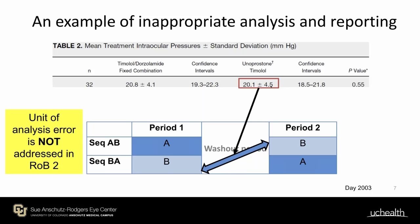The unit of analysis error affects the precision of the estimate rather than the point estimate, which is why it is not really addressed in the RoB2 tool. However, when putting inappropriately analyzed crossover trials together with other trials in a meta-analysis, there will be consequences: the trial will be assigned relatively less weight than it should. Some of our group's work has shown that nearly three quarters of trials published in the literature used inappropriate analysis and reporting of crossover trials.